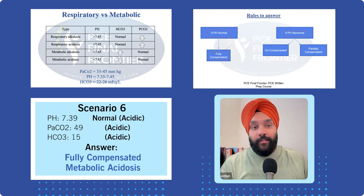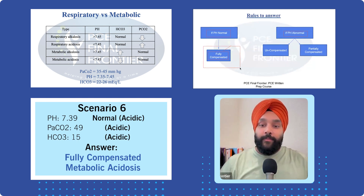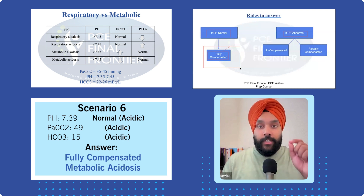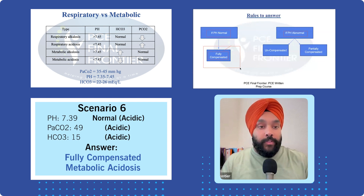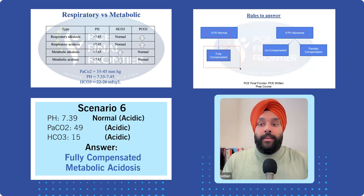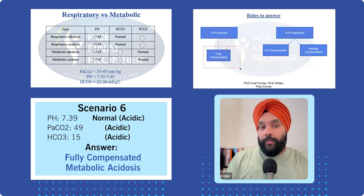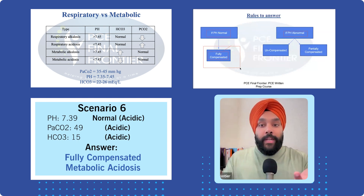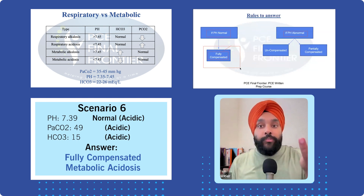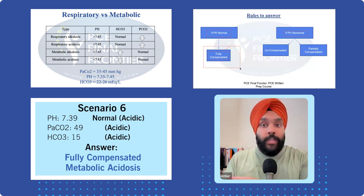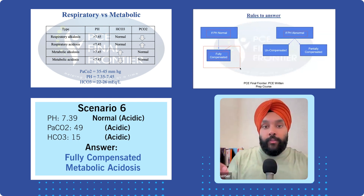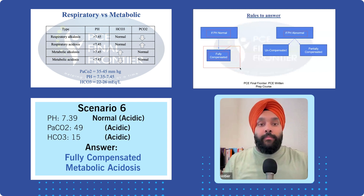Stick to the basics: when pH is completely normal, it's fully compensated. So it's fully compensated metabolic acidosis. It would have been partially compensated if pH were not in normal limits. But because pH is in normal limits and bicarbonates are compensating more — successfully pulling pH into normal — that's why we call it fully compensated metabolic acidosis.